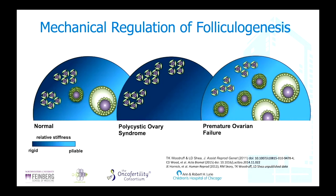There is this compartmentalization we know exists — follicles are in different compartments, and when you cut across those, you sort of release them. If you're not going to harvest all of them for future use, they will either be damaged or lost. This is similar to the concept of drilling or cutting or slicing used to stimulate activation in polycystic ovary syndrome — that's really what we're doing when we cut across the cortical surface, leaving behind activated follicles that may then be lost.